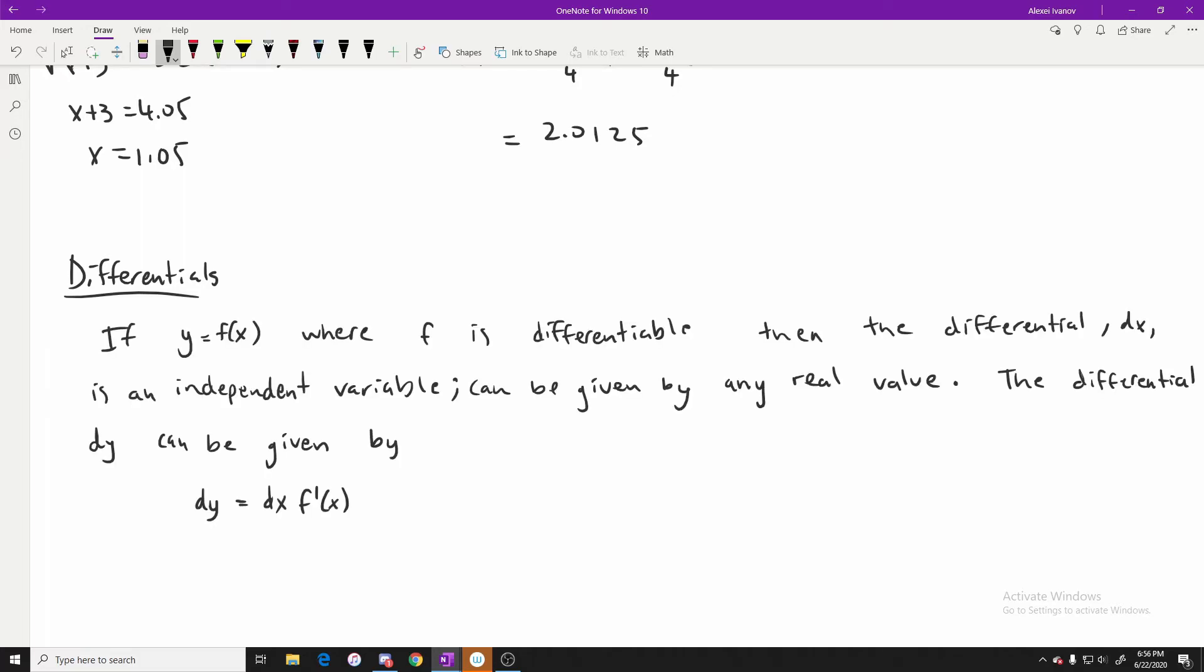So here's kind of the definition for what a differential of x is and a differential of y. Essentially, if we have a function y equals f(x) where f is differentiable, then the differential dx is an independent variable. So like it says here, it can be given any real value. And the differential of y depends on the differential of x and the derivative of the function at x, as we can see right here. And this definition of the differential of y, by the way, the d is the differential. And then the next thing that comes after that is the variable.